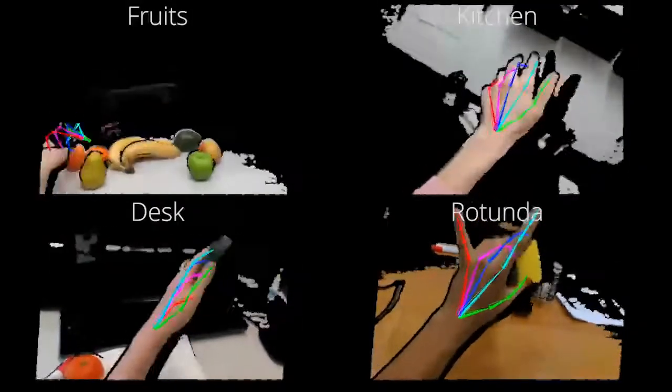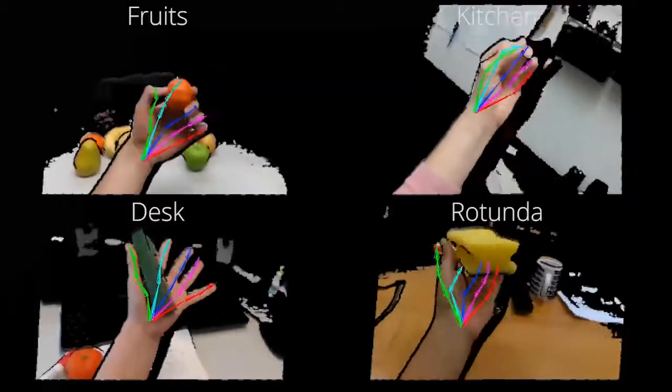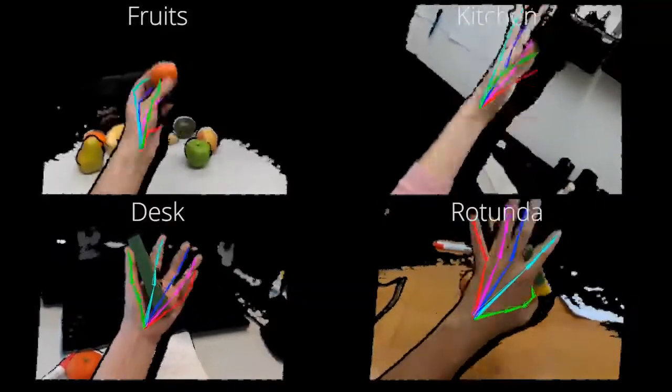The sequences in the dataset cover diverse cluttered scenes, notable occlusions, and diverse hand object interactions.